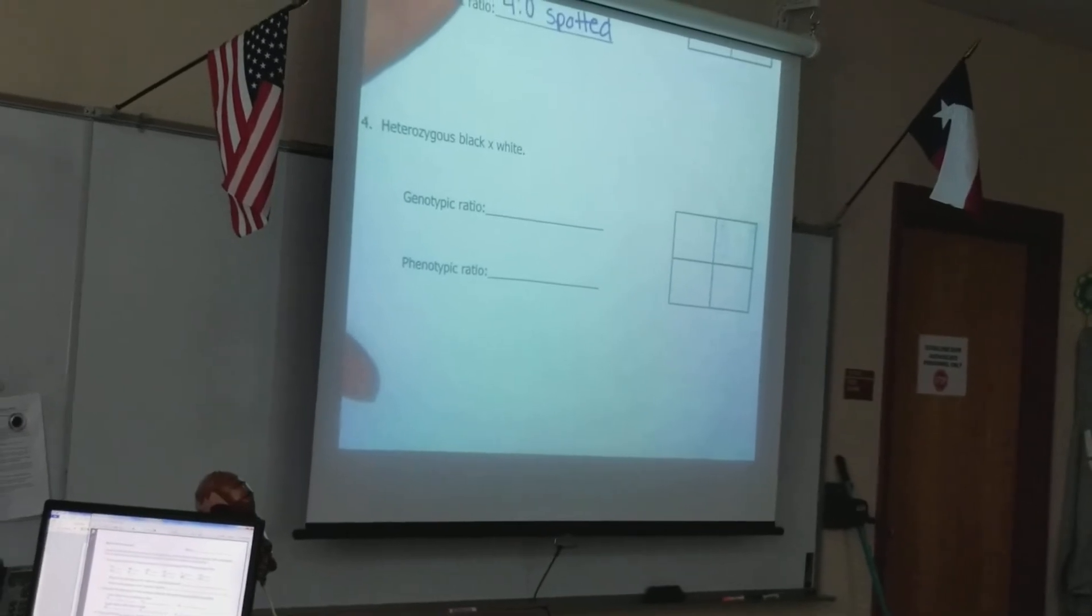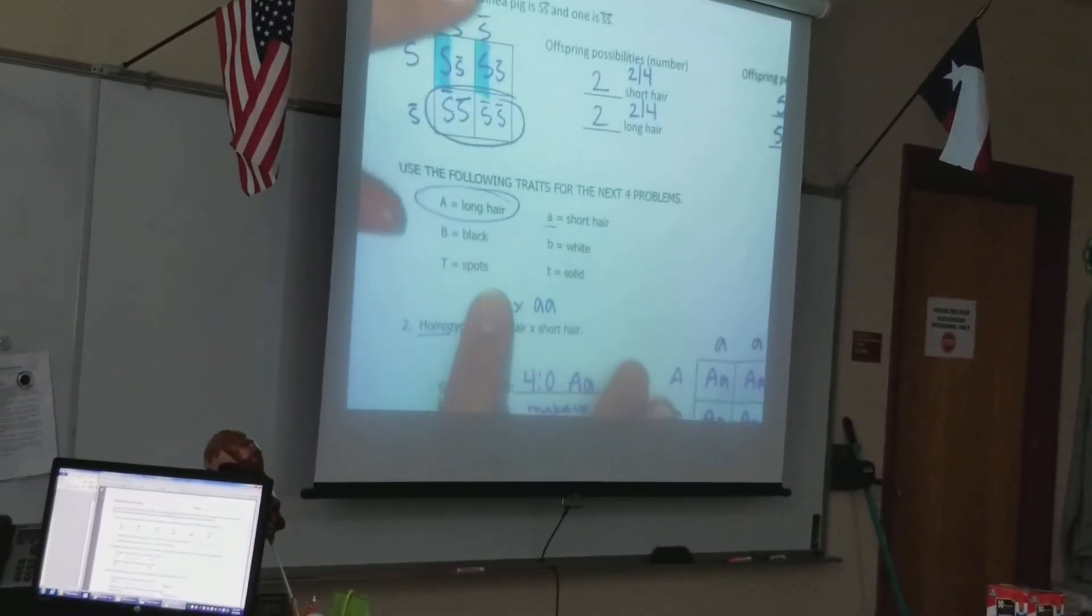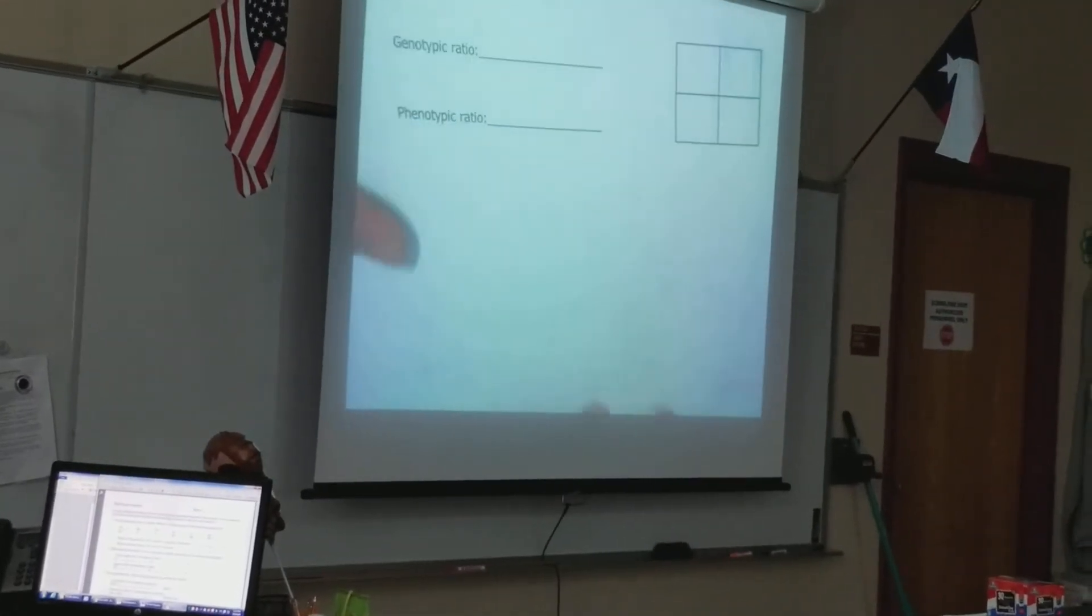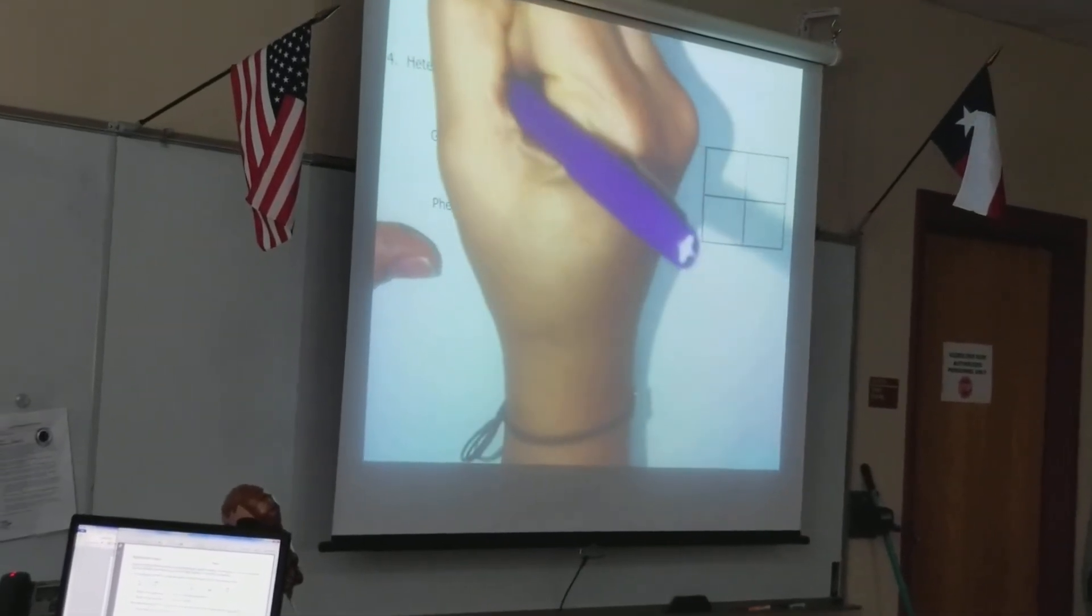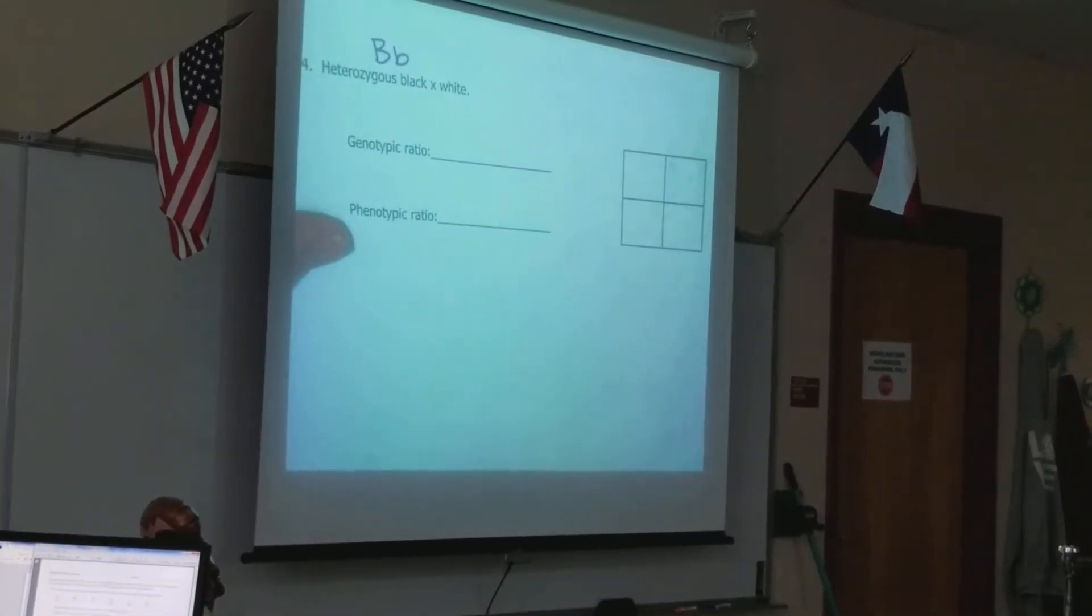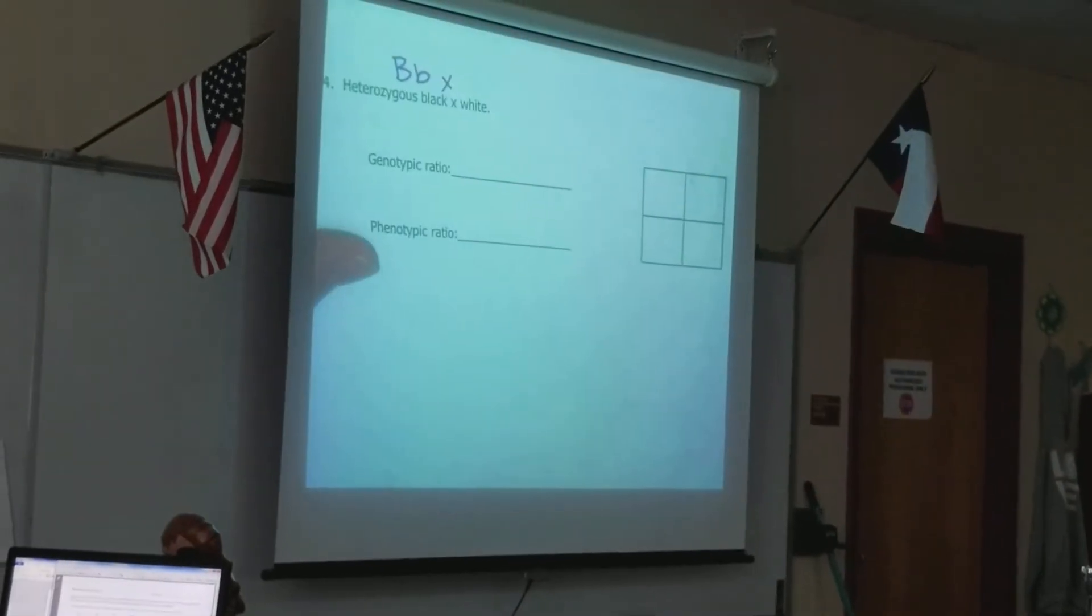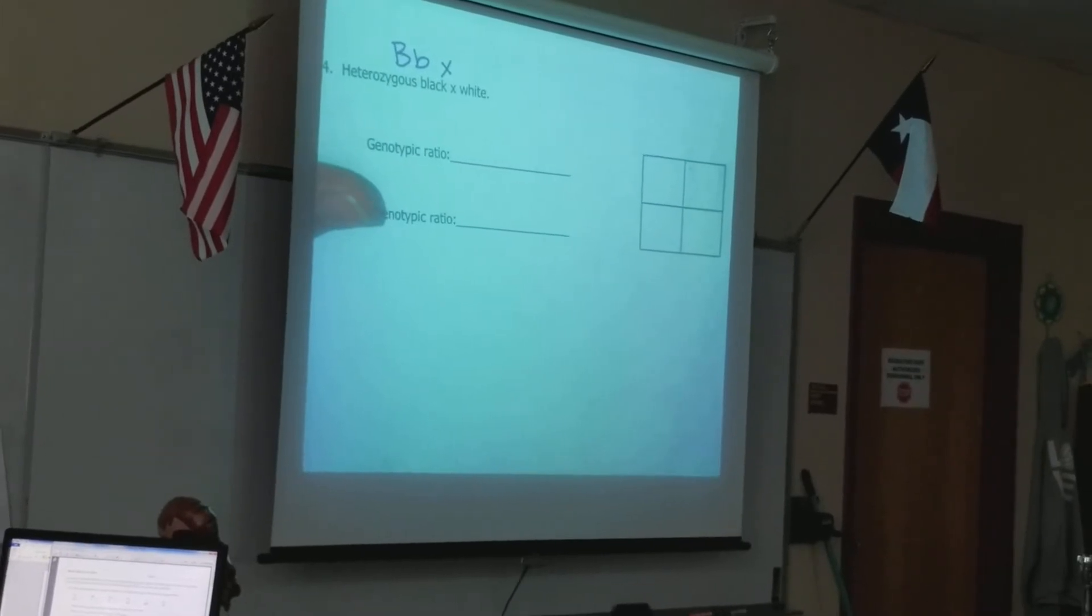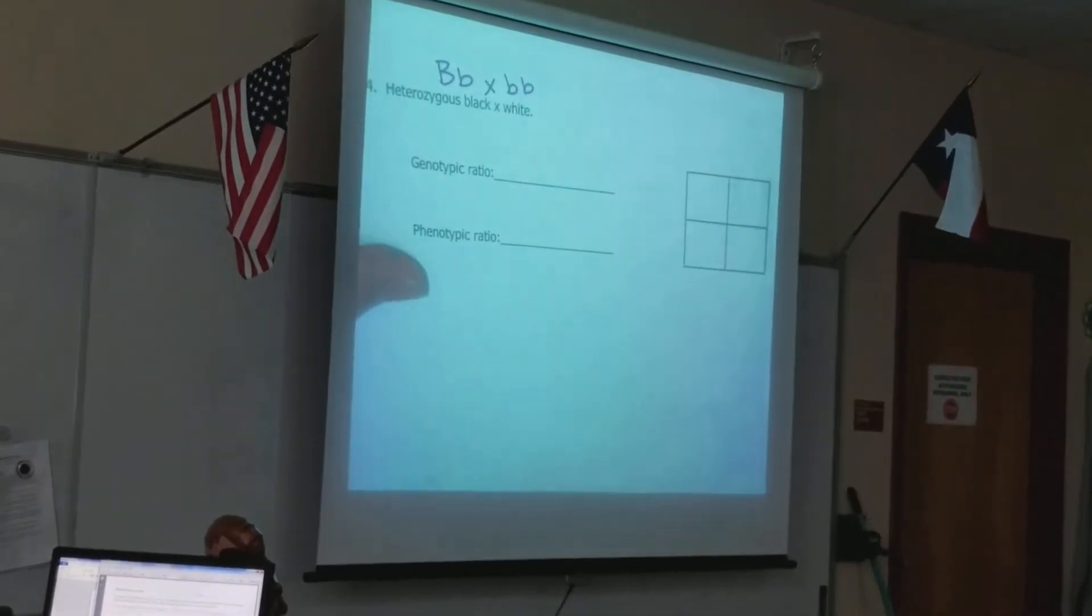All right, so now let's do this heterozygous black crossed with a white. Our key tells us that black is dominant and white is recessive. So if I have heterozygous black, I'm going to have one of each, right? One dominant, one recessive. If I cross it with white, in order for the recessive trait to be expressed, what must happen? Both of them have to be present. So I'm going to have two recessive alleles.